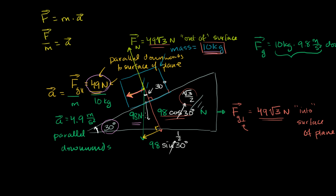Now let's say that wasn't happening. Let's say you look at this system and the block is just stationary. For the sake of argument, let's assume it's not ice on ice — let's assume they're both made out of wood. If the block is stationary, what is necessarily the case? If it's not accelerating in the perpendicular direction, there must be zero net forces in that direction. But if it's stationary as a whole, there must also be zero net forces in the parallel component. So there must be some force counteracting the 49 newtons that wants to take it down the slope.